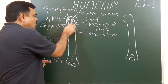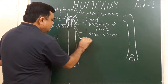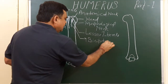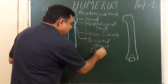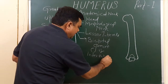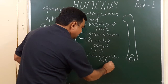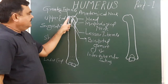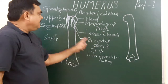This groove is known as the bicipital groove. It is also known as the inter-tubercular sulcus because it lies between the two tubercles — the lesser tubercle and the greater tubercle. So it is known as the inter-tubercular sulcus or bicipital groove.